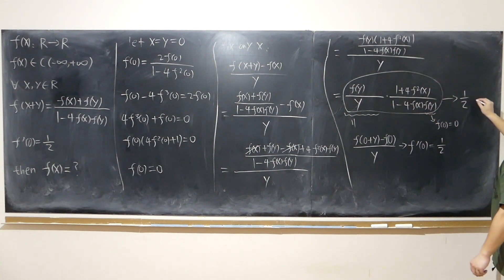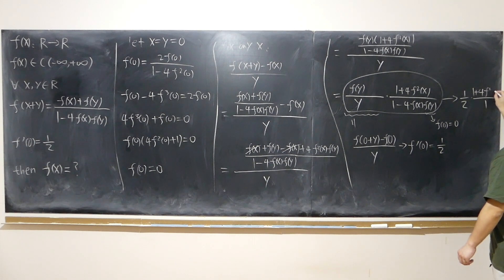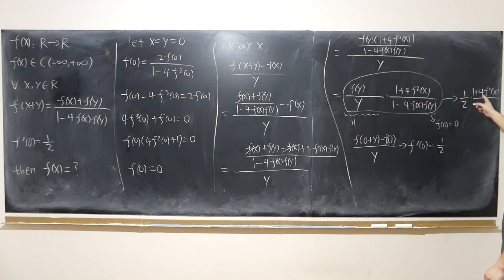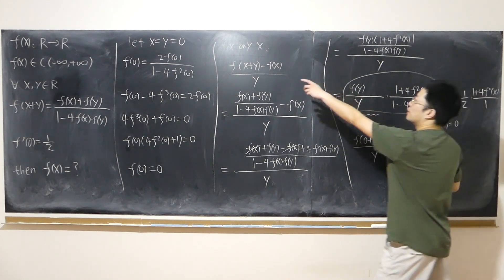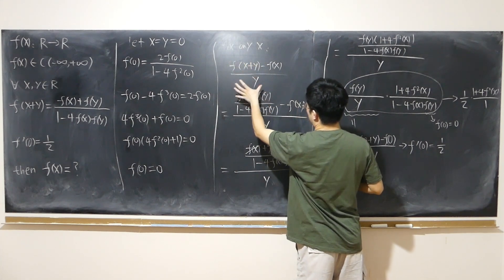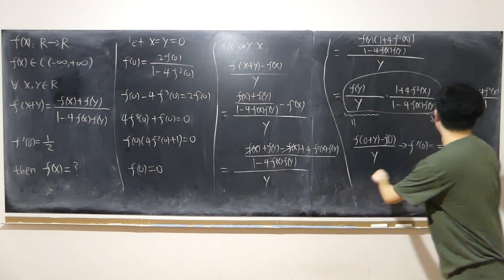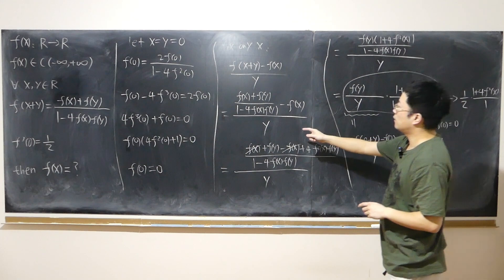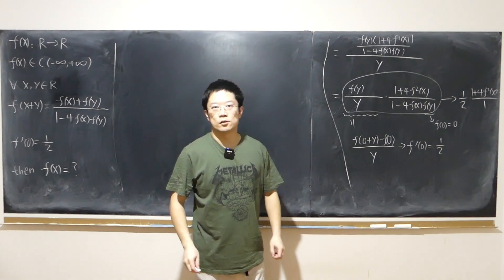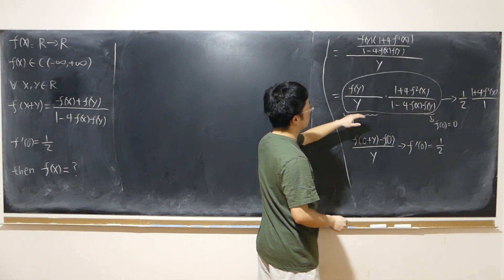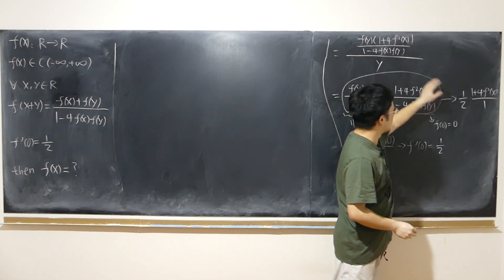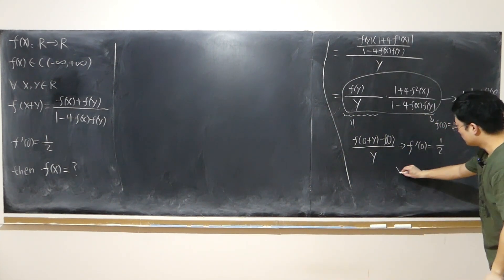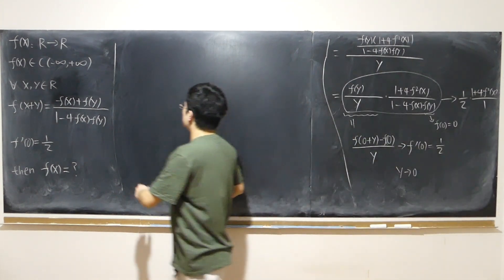So the whole expression tends toward one half times 1 plus 4f²(x), over 1. Since x is any arbitrary fixed point, this gives us the explicit form of f'(x). We have found that f'(x) equals one half times the quantity 1 plus 4f²(x). Now a differential equation can be set up.